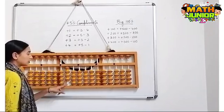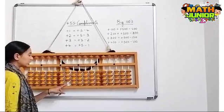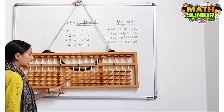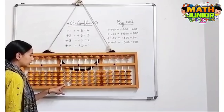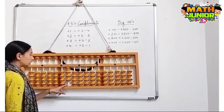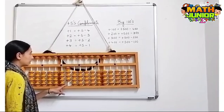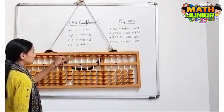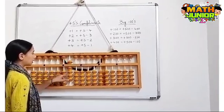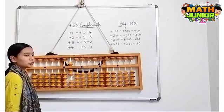Next, I have 400 here and I need to add 300, so the formula for plus 300 is plus 500 minus 200.